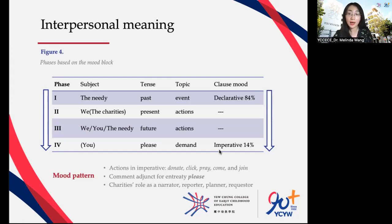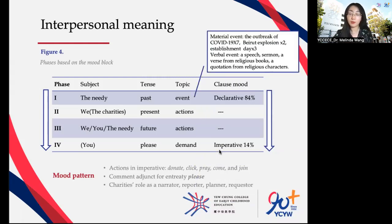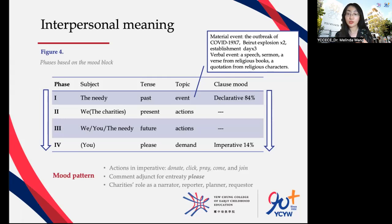Most importantly, a pattern gradually emerged from simultaneous choices in tense, subject, and mood. At the beginning of the text, a past event happens to people in need — material, for example the outbreak of a disease, or verbal, such as a speech. Then the text shifts to present tense with 'we' as subjects. After the present statement, the text switches to future as the mood remains declarative. Then comes one imperative clause, representing a sudden change in the relationship from writer to reader — the writer shifts into the goods and service mode of 'I am asking you to do something,' and a donation is requested.